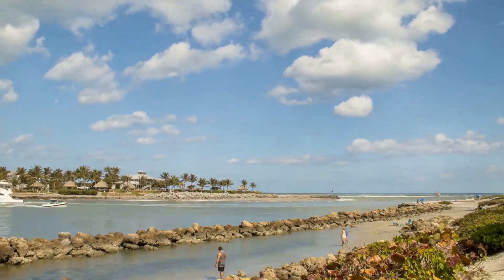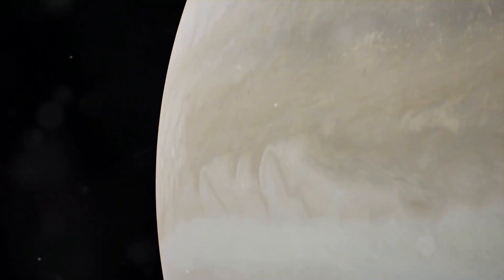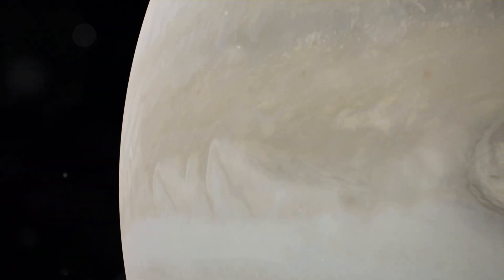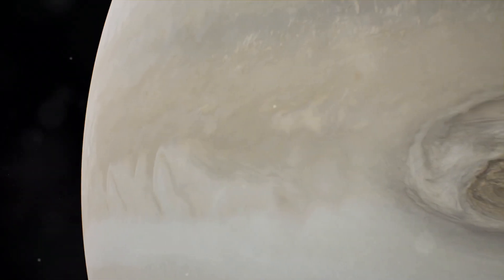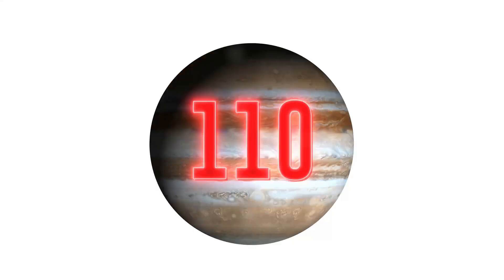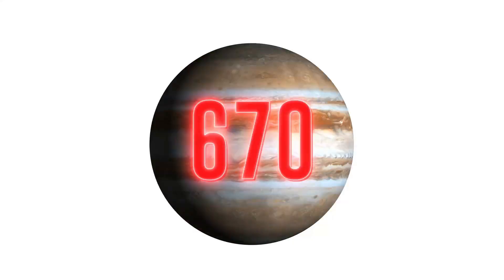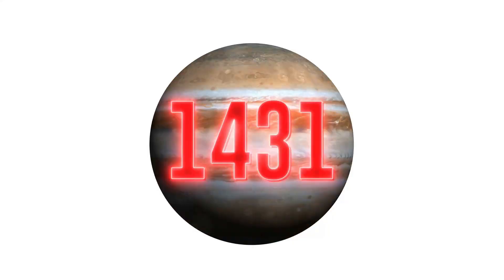Jupiter: This is the biggest planet in our solar system. It's so large that all the other planets could fit inside it. It's a gas giant, which means it's made mostly of gas and doesn't have a solid surface like Earth. Its atmosphere is a swirling mix of hydrogen and helium.